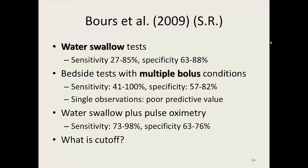Boards et al. in 2009 did a systematic review and determined that looking at the water swallow test, there was a huge range — and remember, this is nine years after the Martino et al. study, so there were many more studies of the water swallow test, some well-designed and some not. They found that the range of sensitivity is very wide. Some water swallow studies were very poor at predicting aspiration, and when looking at the preponderance of evidence, they seem much better at predicting who is NOT aspirating than who is — which is good, since multiple passes give us better confidence of who is not at risk.